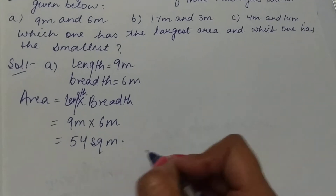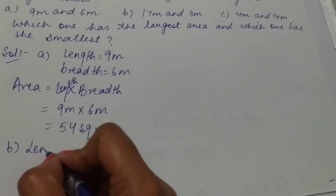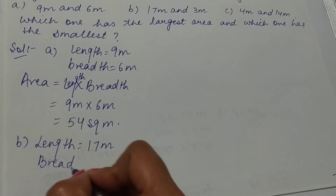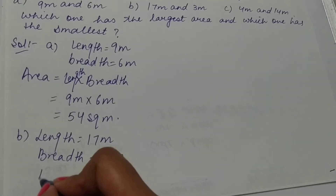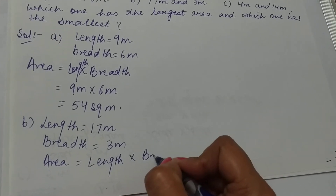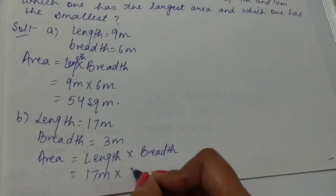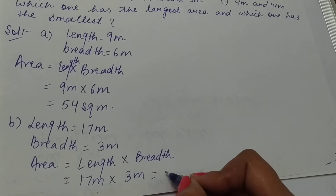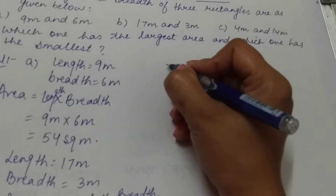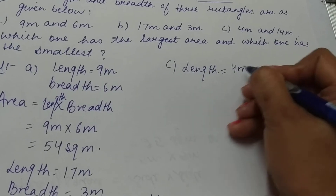For part B, length is 17 meters and breadth is 3 meters. Area of rectangle is length multiplied by breadth, so this will be 17 meters multiplied by 3 meters, and 17 threes are 51 — so this is 51 square meters.